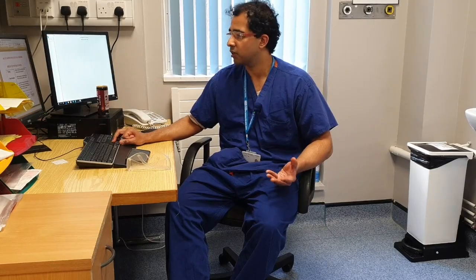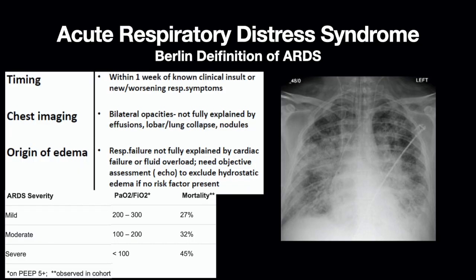Let us now talk about the definition of ARDS. The Berlin definition of ARDS is bilateral fluffy shadows or opacities not fully explained on the x-ray by alternate causes such as pleural effusions or lung collapse, and this occurs within a week of a known clinical insult. This happens in the setting of diffuse hypoxemia and in somebody in whom there is no evidence of another obvious cause such as congestive cardiac failure.